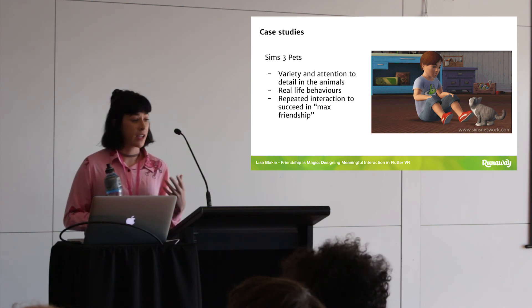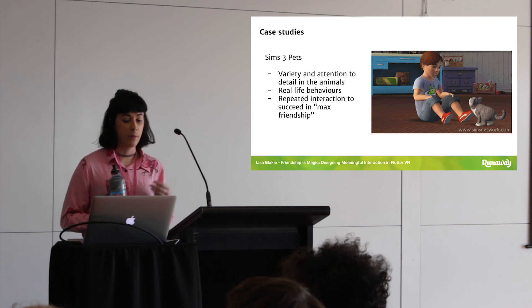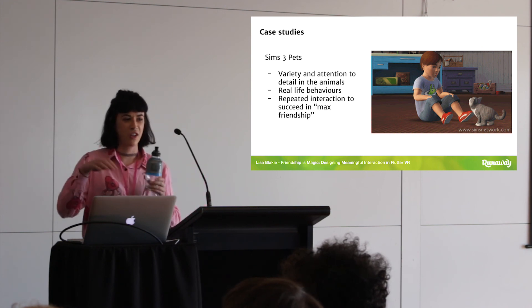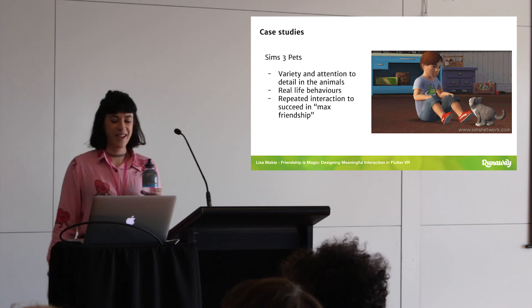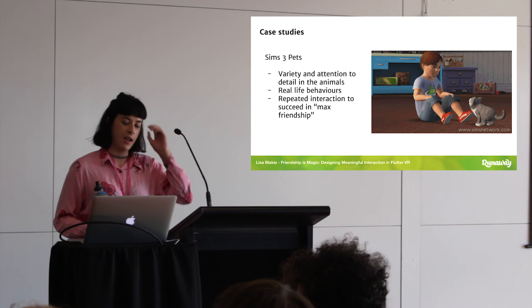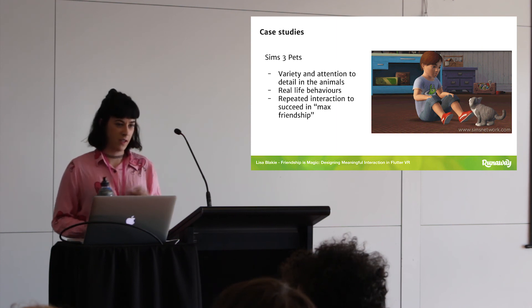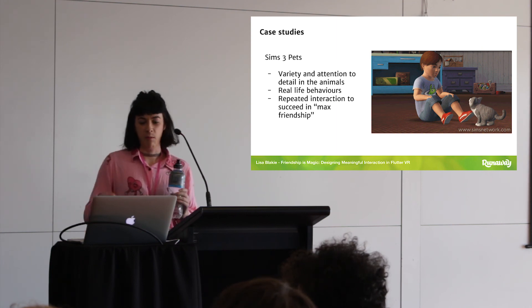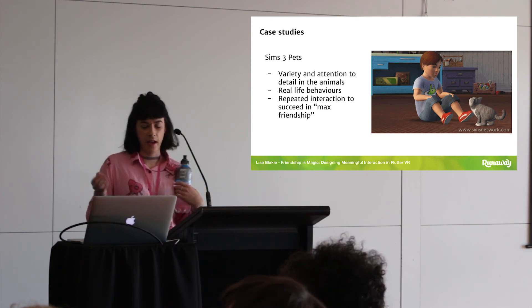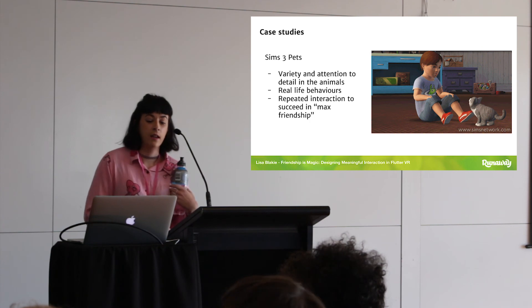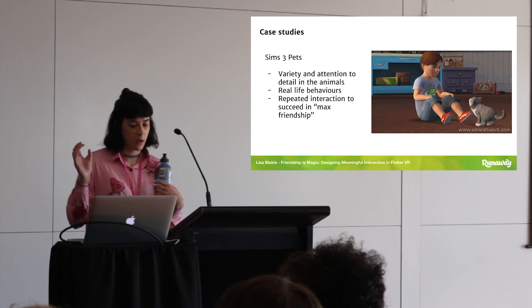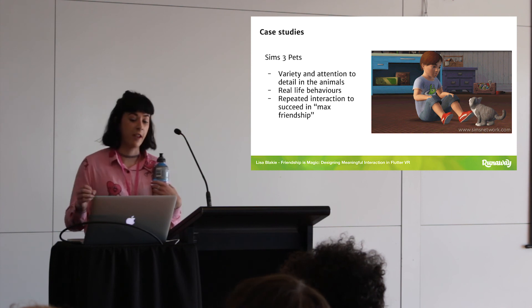Next was Sims 3 Pets specifically. Something they do really well is the attention to detail in the pets - they exhibit real life behaviors like peeing inside and scratching at couches. It has that same interaction as Animal Crossing where you just spam-click to level up and increase your friendship. But I really liked that they exhibited real-world behaviors that pets do, so I took that to apply to Flutter VR.